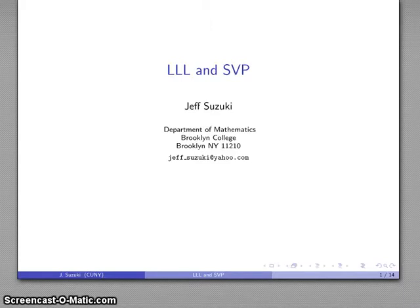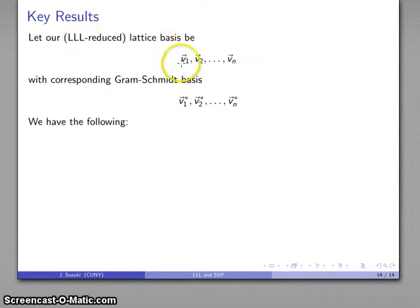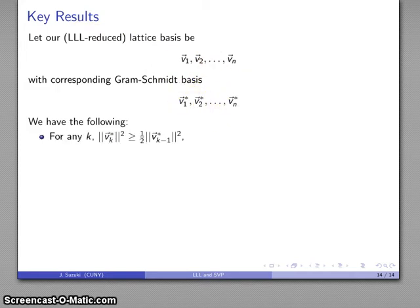Let's continue our discussion of how effectively LLL solves the shortest vector problem. A quick review of our key results so far: suppose I have a lattice that has been reduced by LLL to a set of basis vectors and the corresponding Gram-Schmidt basis vectors. Then in that case we have the following.